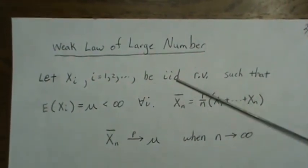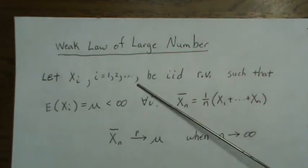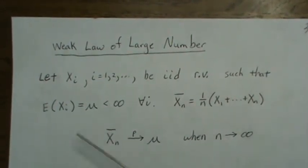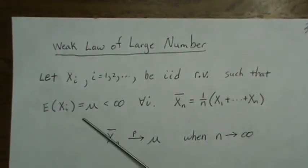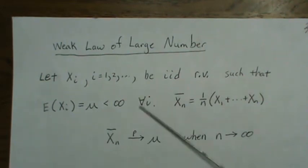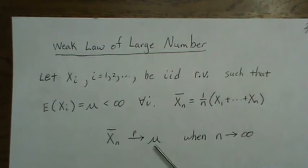So the weak law of large numbers says that if you have data Xi, from one to infinity, and they're independent, identically distributed random variables such that the mean or their first expectation is finite for all i, and if we let the mean for a given N be this, which is the standard definition, it says that the sample mean converges in probability to the population mean when N goes to infinity. So this is what we want to show.